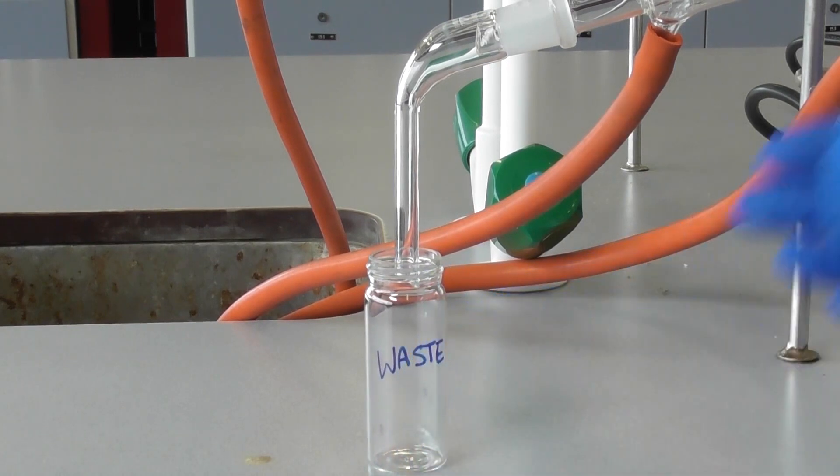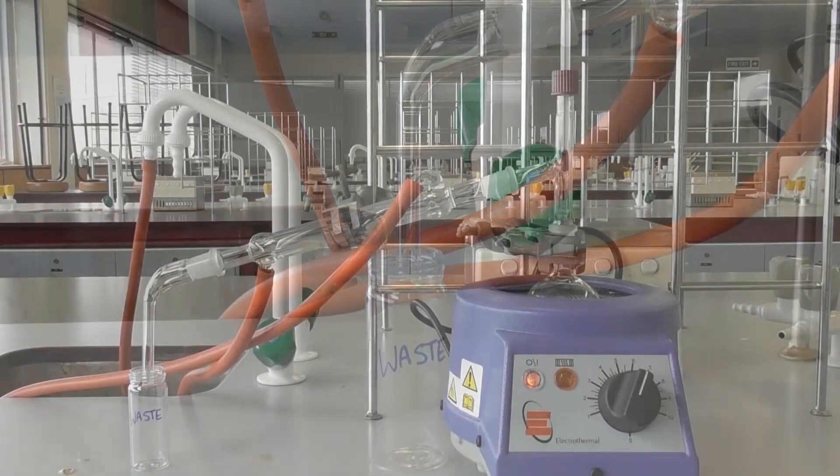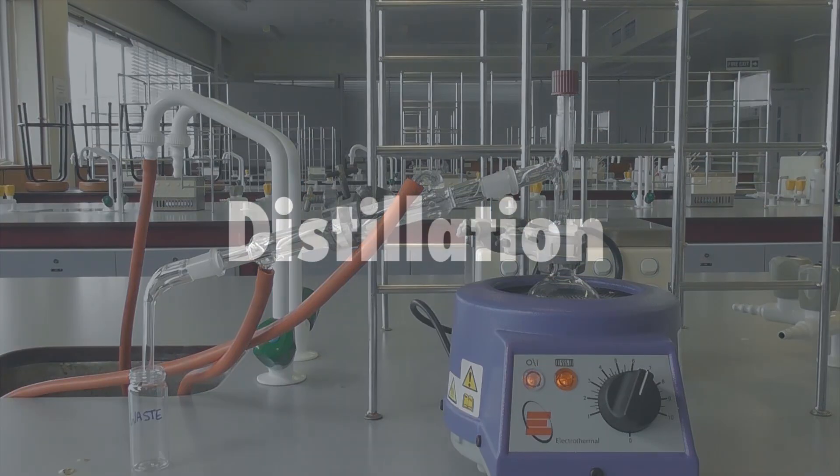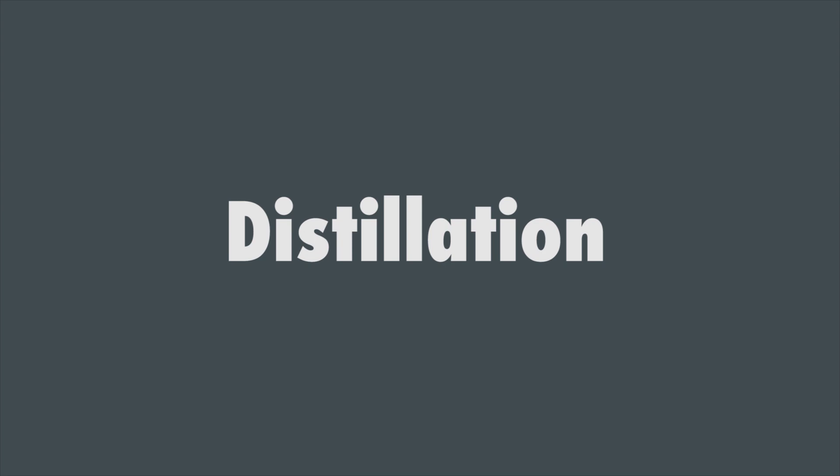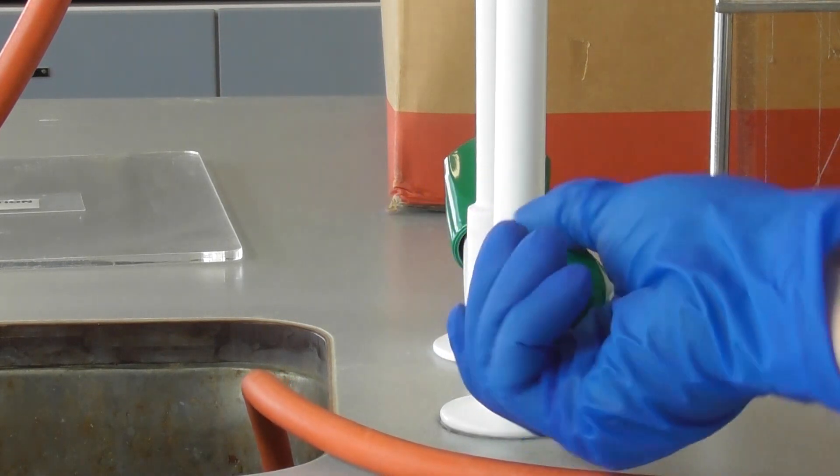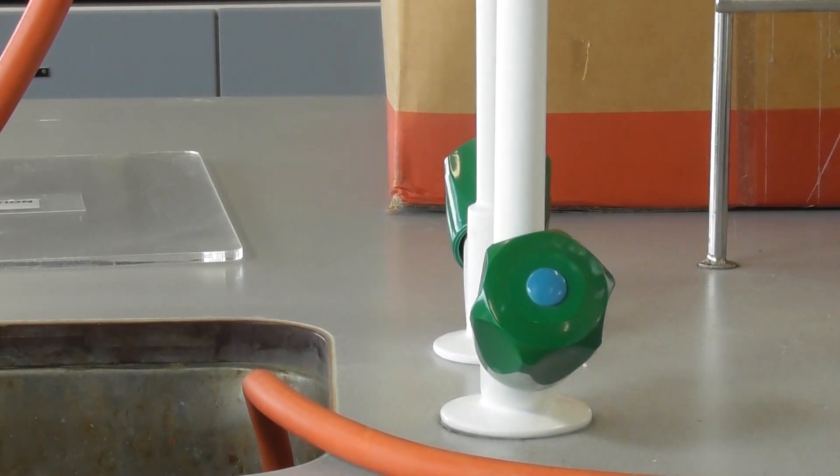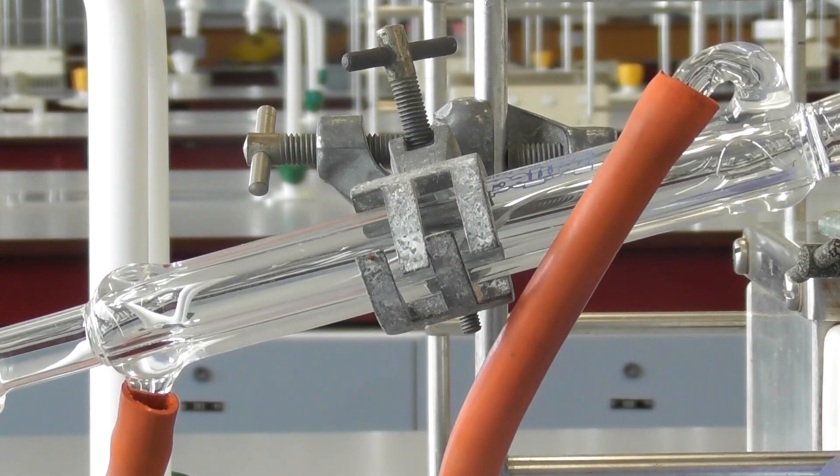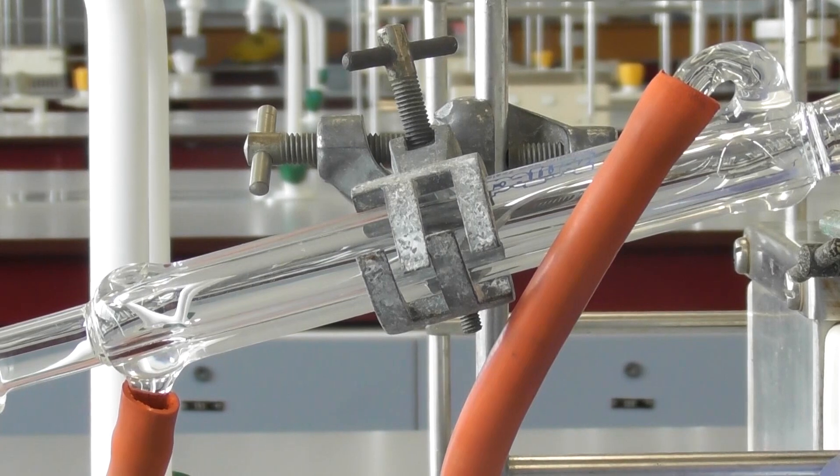Now your setup is complete. Note that the thermometer is vertical, the condenser points at a downward angle and the connections are fitting together properly. Begin by slowly turning on the tap. Check the rate of flow by watching the condenser fill with water. After the condenser is full, you should monitor the flow by checking the end of the hose in the sink.